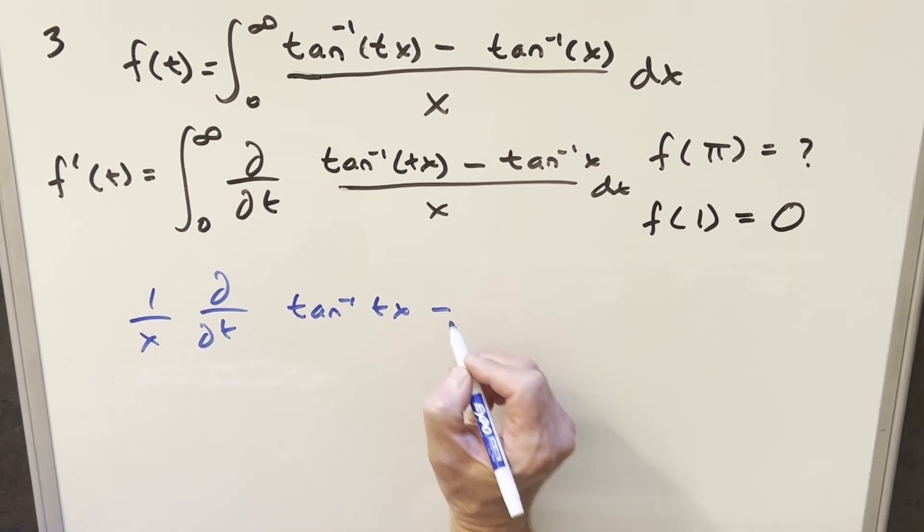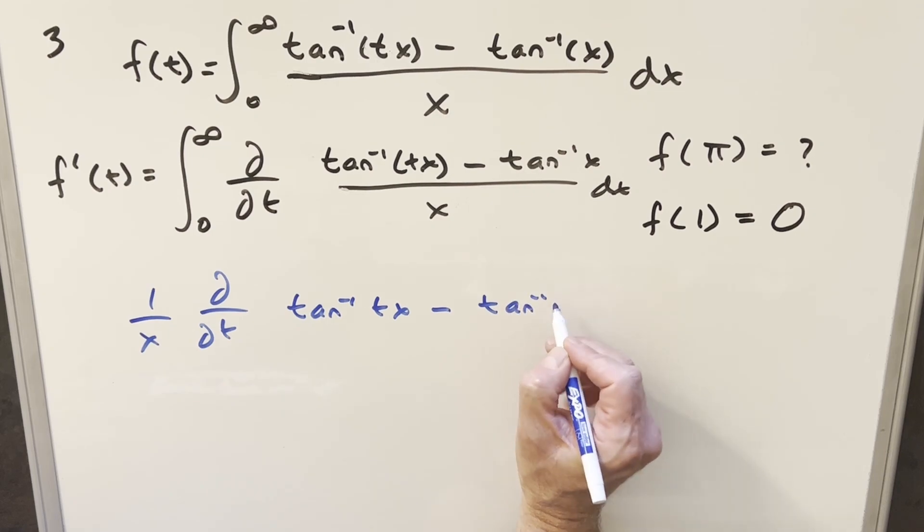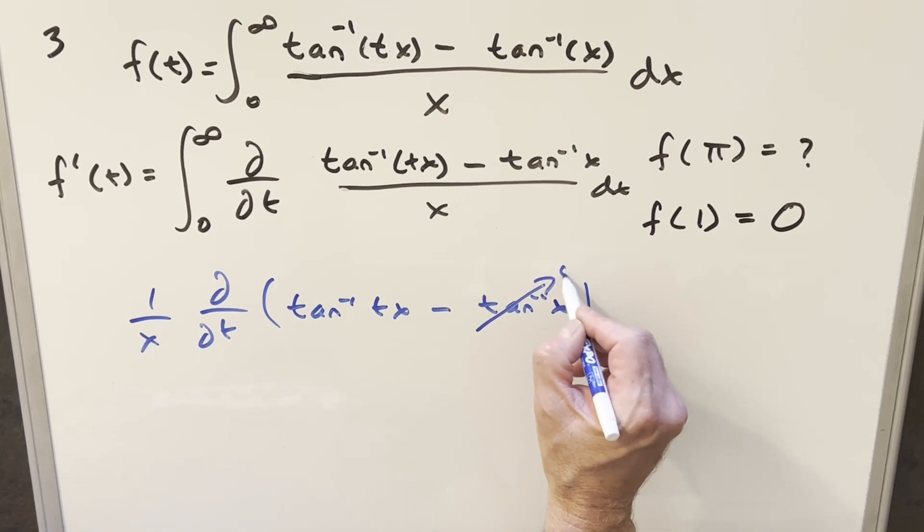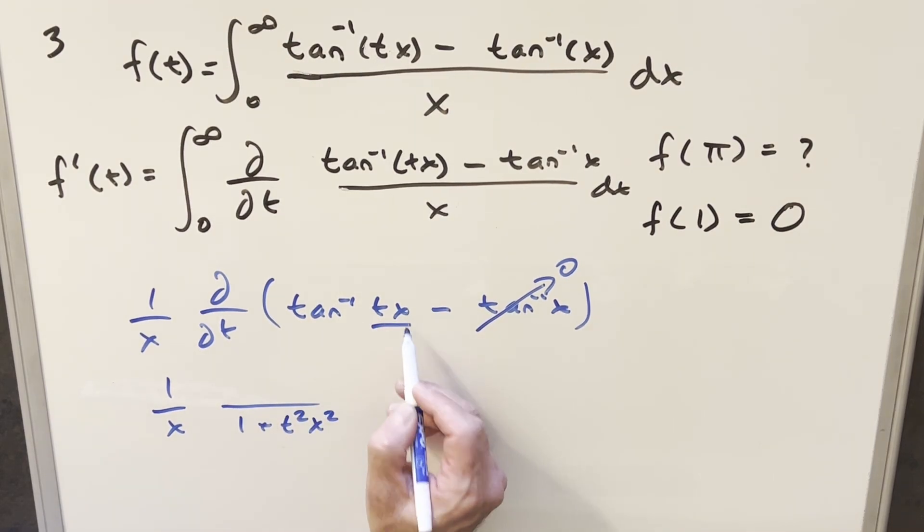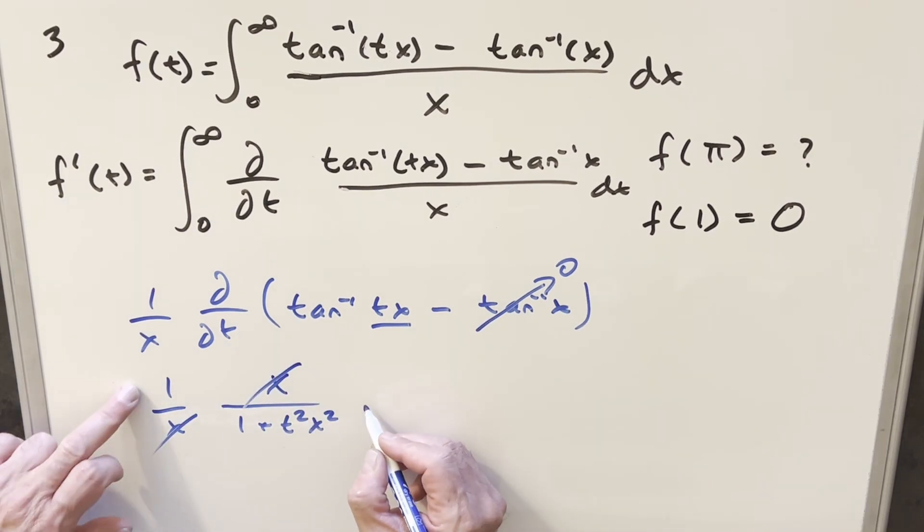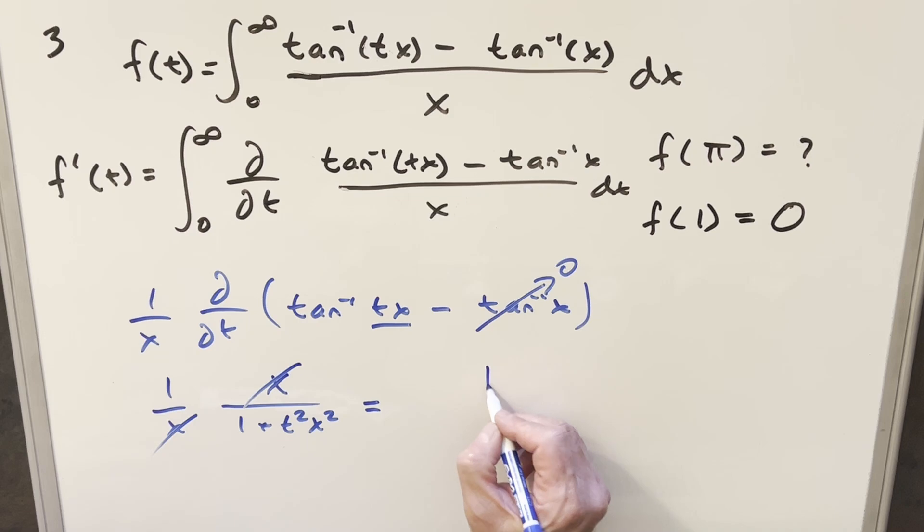But then what's going to happen is over here, this arctan of x, differentiating this part with respect to t, that's just a constant again. So this part is just going to be zero. So differentiating arctan of tx, we have our one over x in front. Derivative of this is going to be one over one plus, we'll separate out like t squared x squared. And then chain rule, derivative of this with respect to t, that's just going to be an x. But then the x's are going to cancel. And what we've done, we just transformed this whole thing down to one over one plus t squared x squared.